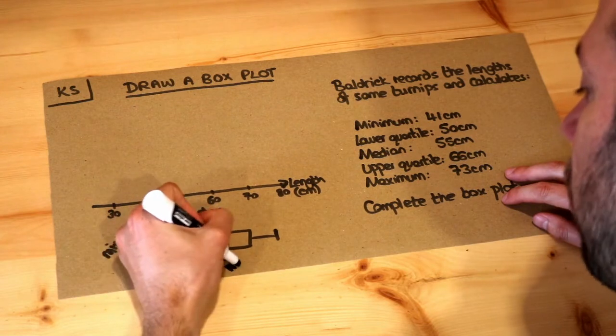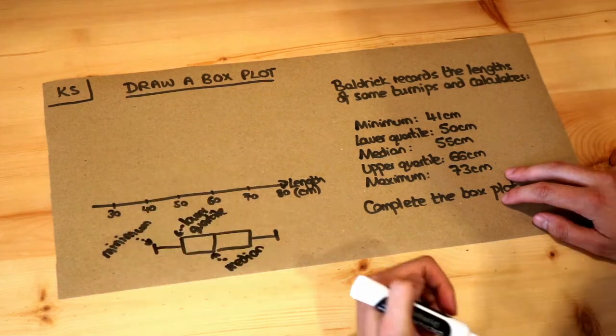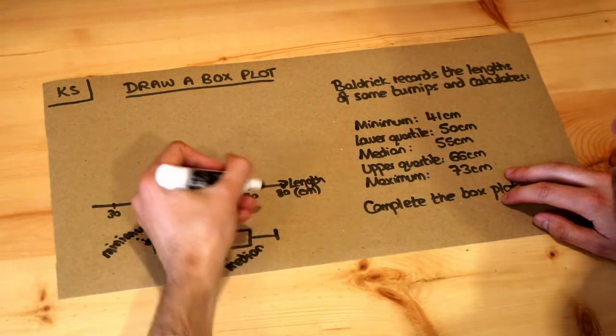The median is halfway across your values, so what's the length of the middle turnip if you put them in ascending order of height.